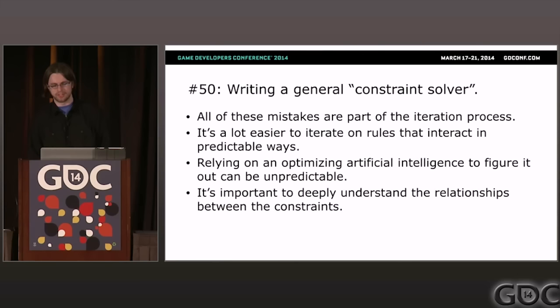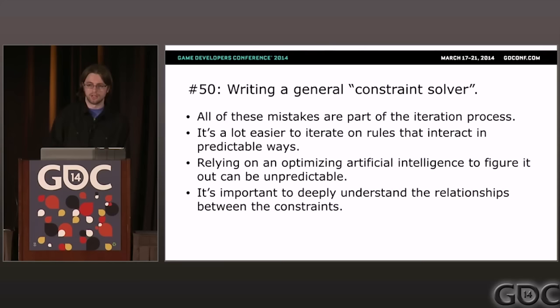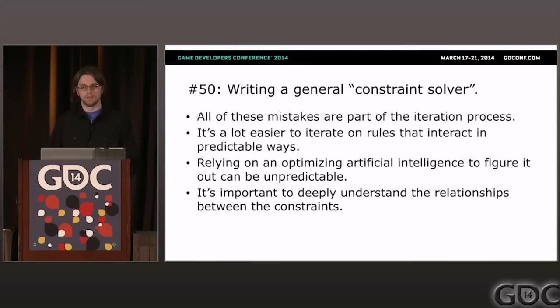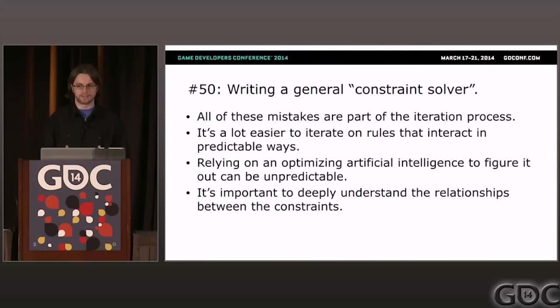Problem fifty: writing a general constraint solver. Given the complexity of all the constraints I've been describing, it's tempting to come up with a function that evaluates how effectively each constraint has been satisfied and then let the computer optimize and pick the angle that satisfies them all best. But this is almost never the right approach, because when you let the computer do all the work, it's very difficult to predict the results. If you can't predict it, you can't really design it — you have to be able to iterate with changes that affect behavior in somewhat predictable ways. It's important to deeply understand the relationship between different camera constraints to be able to prioritize them.